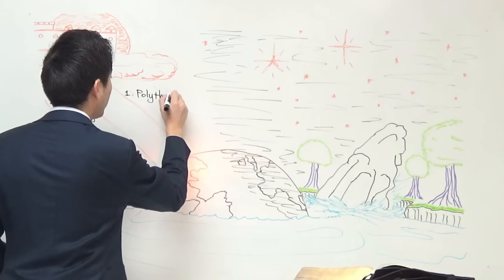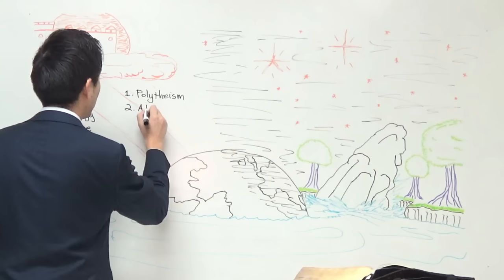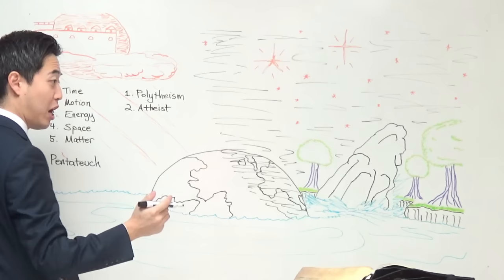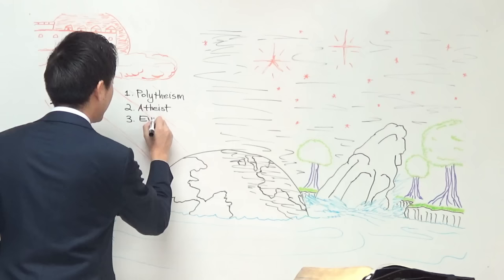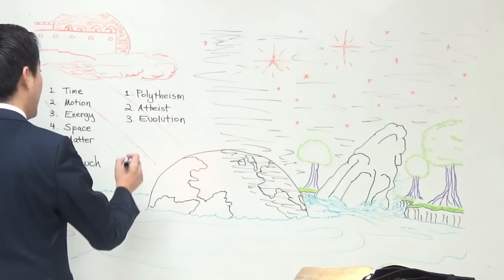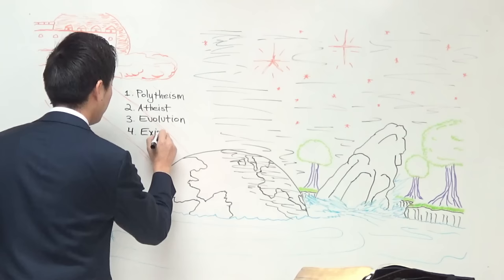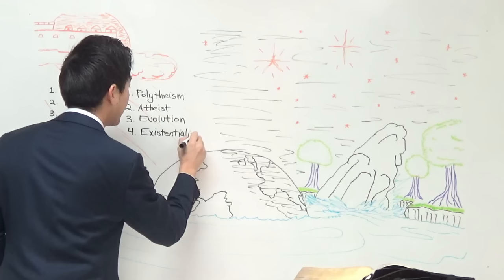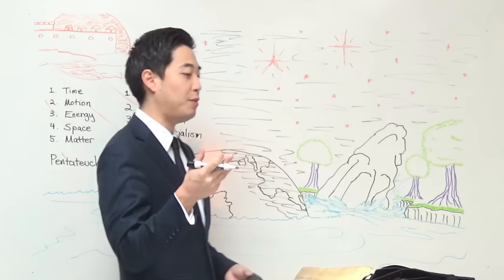Atheism is also out of the picture. The atheist will struggle with that first verse: "In the beginning, God" — meaning that God exists. It also debunks evolution. Notice that it says "In the beginning, God created the heaven and the earth." The heaven and the earth did not evolve by itself — it was created. The Bible also debunks existentialism.